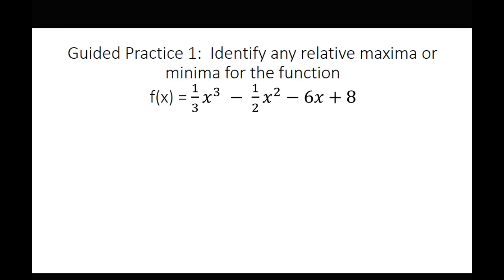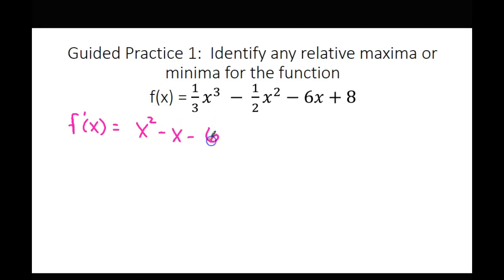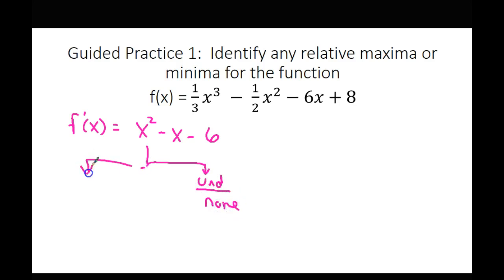Now let's do the next example. Go ahead and find the derivative. The derivative is x squared minus x minus 6. Where is it undefined? Nowhere — it's still a polynomial. But we do find where it equals zero, so I'll pause and let you guys find that.